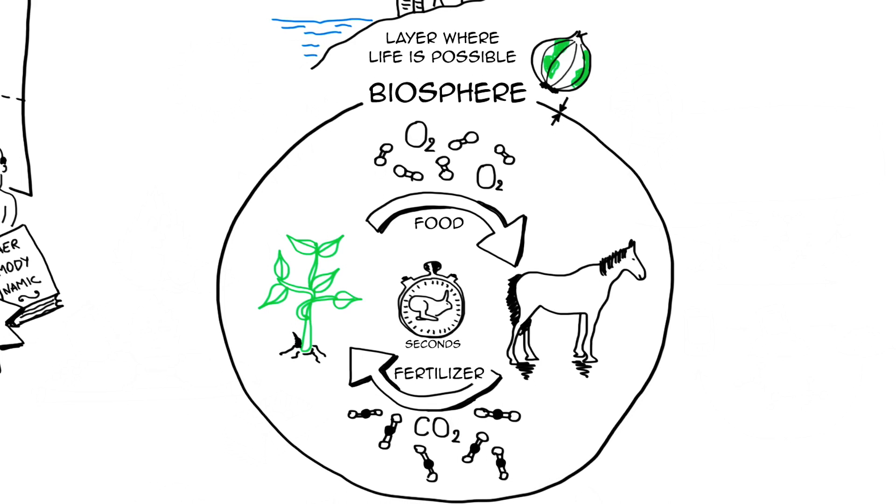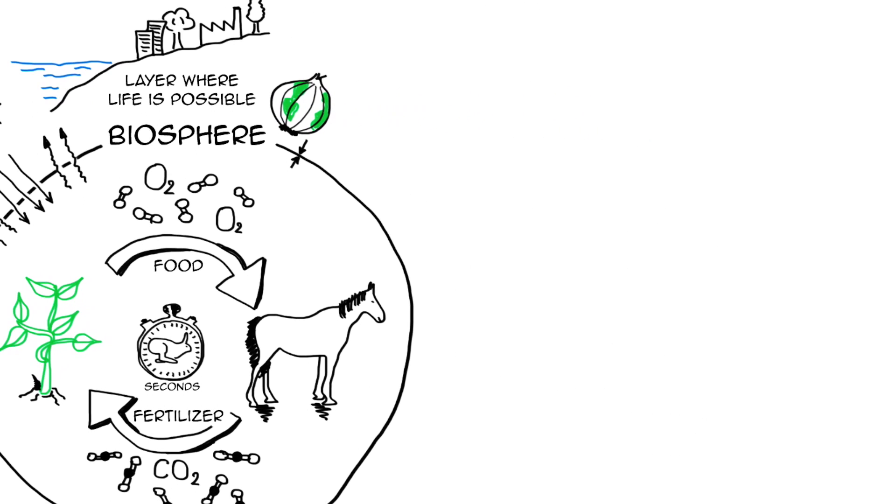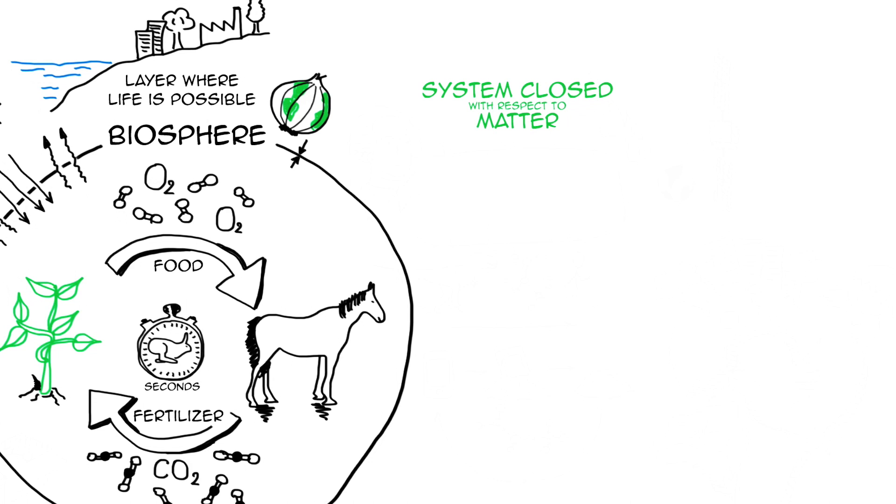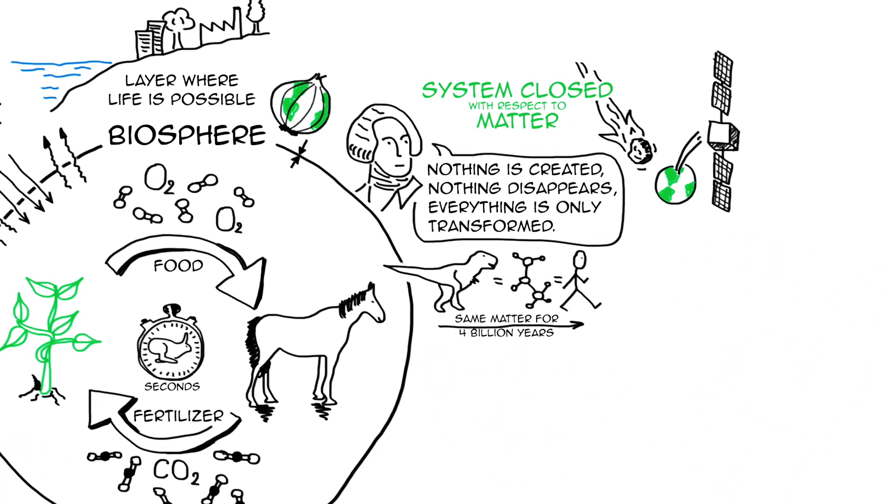Then they agreed on the fact that this system, the biosphere, is open with respect to energy. So this means that energy from the sun comes in and radiations come out. And they also agreed on the fact that this system is closed with respect to matter. So maybe you remember this very famous phrase from Lavoisier that says, nothing is created, nothing disappears, everything is only transformed. So this is also known as the first law of thermodynamics, the law of conservation of matter. And it means that except for a few satellites and meteorites, all the matter that was on earth 4 billion years ago is still here today. It has changed form and the molecules reorganized themselves over time, but it is still the same matter.